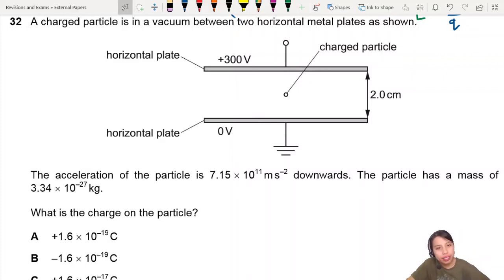A charged particle is in a vacuum between two horizontal metal plates as shown. Still in electric fields, but we don't know what charge the particle is. The acceleration of the particle is 7.15 times 10 to the 11 meters per second squared downwards. The particle has a mass that's given to us. What's the charge of the particle?